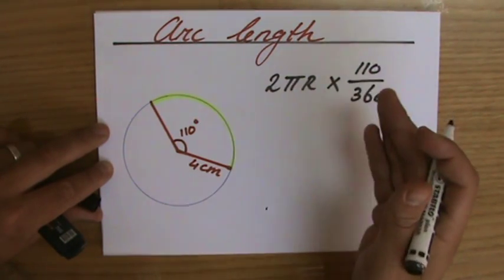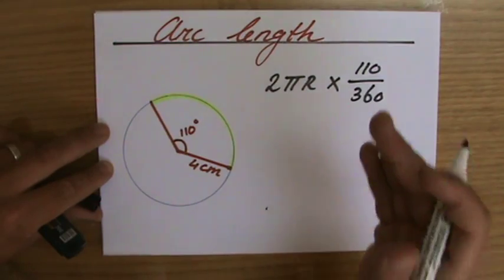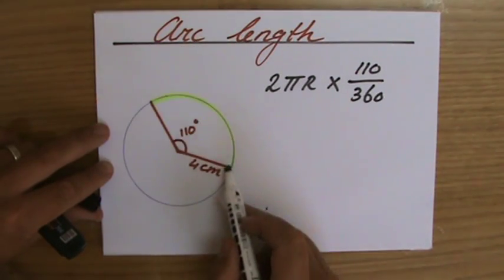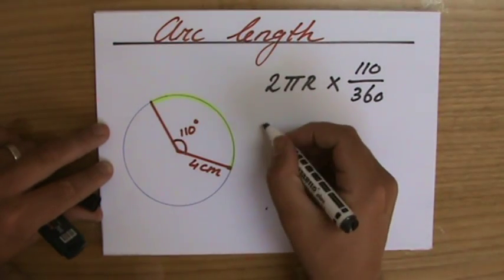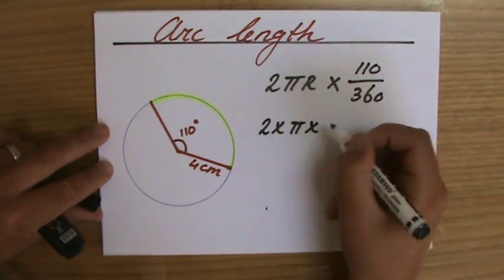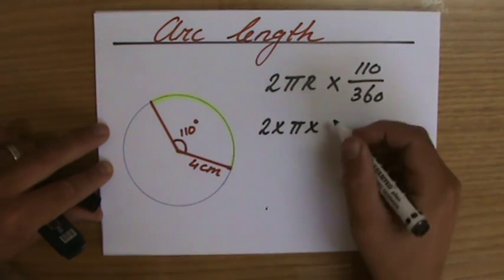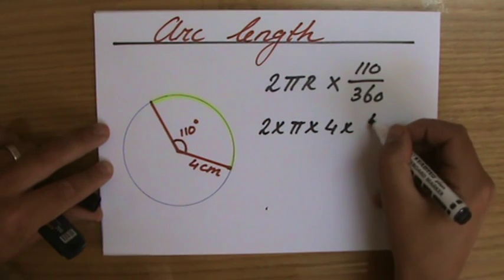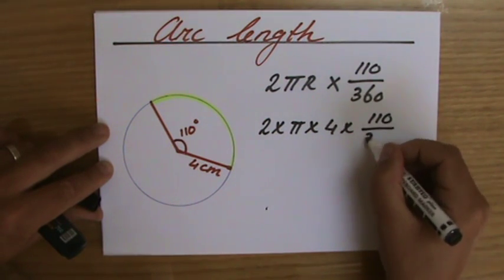So that's going to give me the arc length, that's going to give me the circumference of this part of the circle. Two times pi times the radius, four centimeters, times 110 over 360.